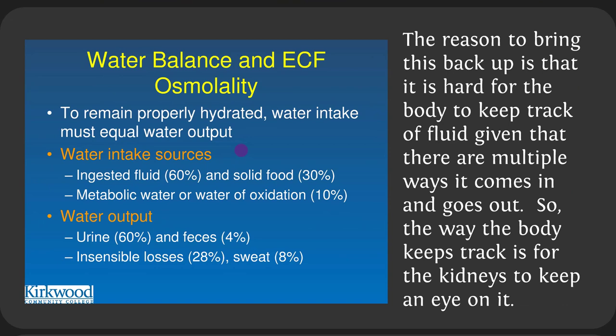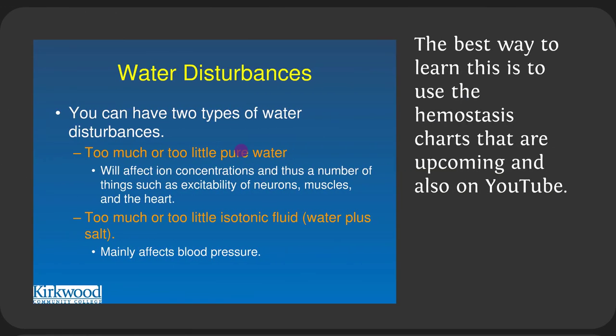It's hard for the body to keep track of fluid given that there are multiple ways it comes in and goes out. The body can't directly calculate inputs and outputs — you drank 20 ounces, lost 10 ounces running, had salty popcorn. There's too much going on for the body to track that way, so it just keeps track by having the kidneys monitor blood. The best way to learn these water disturbances is to use the homeostasis charts, which are available on YouTube.